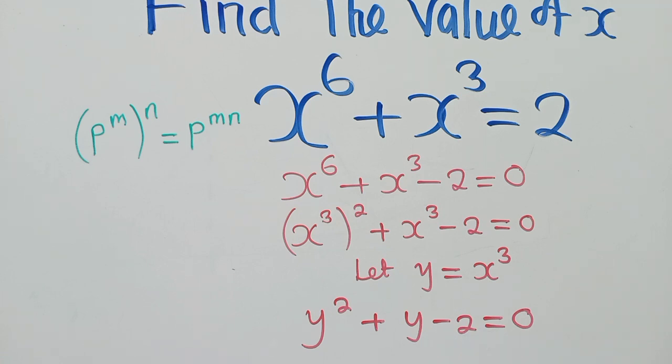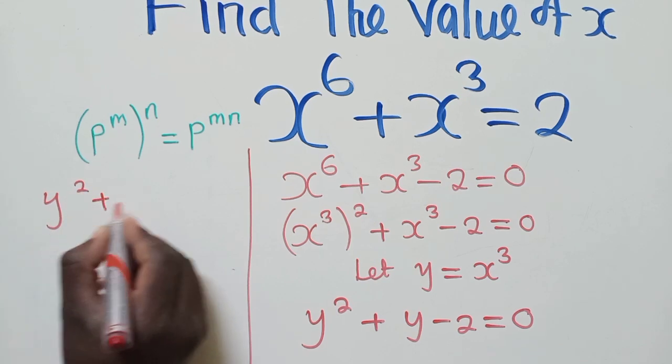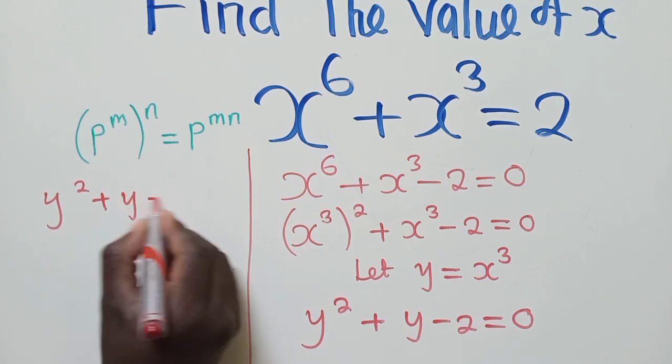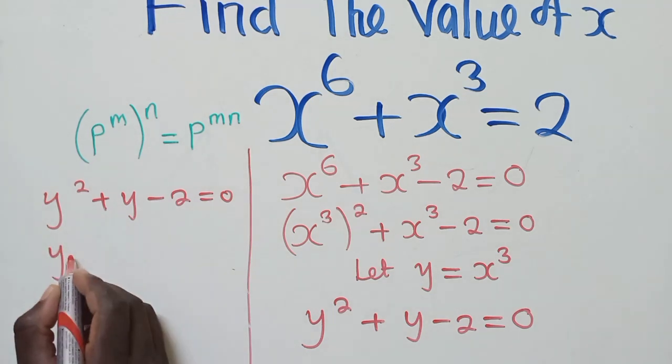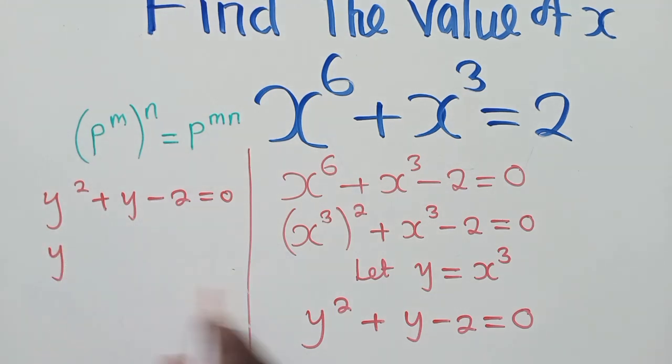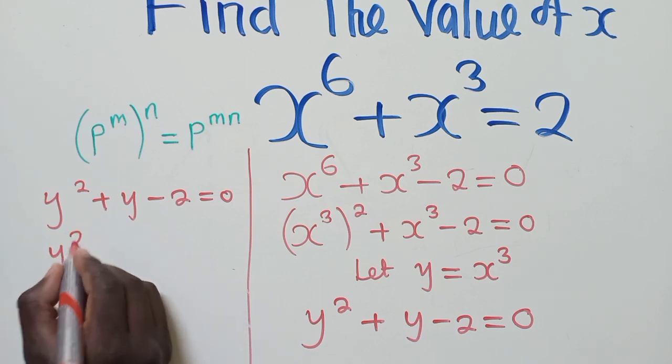So we solve the quadratic equation. To solve this quadratic equation, of course we shall have y squared plus y minus 2 is equal to 0. We need to find the factors. We're going to solve this by factorization.